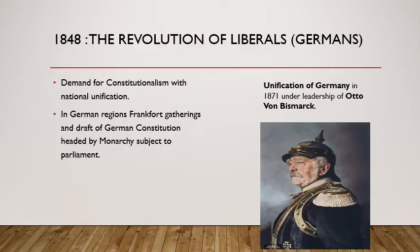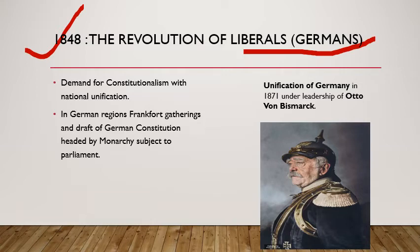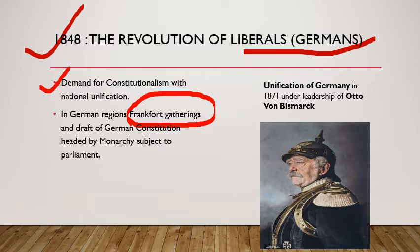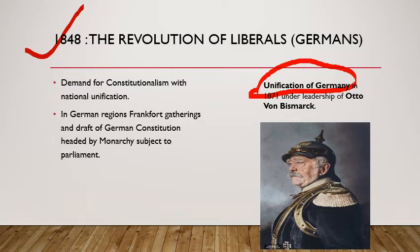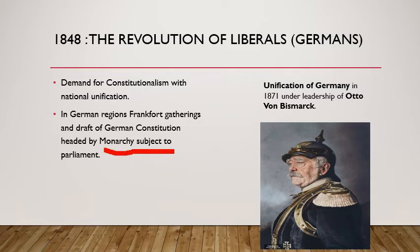In 1848, the revolution of liberals: Germans demanded constitutionalism with national unification. In German regions, the Frankfurt gathering drafted a German constitution headed by a monarchy subject to parliament. Nationalist feelings were widespread among middle-class Germans, who in 1848 tried to unite the different regions of the German Confederation into a nation-state governed by an elected parliament. This liberal initiative to nation-building was, however, repressed by the combined forces of the monarchy and the military, supported by the large landowners called Junkers of Prussia.